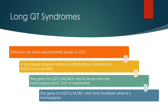A functional channel is constituted by a tetramer of KVLQT1 and MinK. The gene for LQT1 is KCNQ1, and in those who are homozygous for it, JLN1 is manifested. The gene for LQT5 is KCNE1, and JLN2 manifests when it is homozygous.